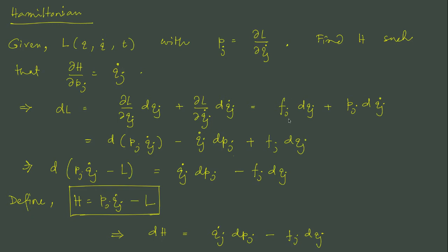Let us suppose del L del qj is fj, so fj dqj plus del L del qj dot is pj, so pj dqj dot. Remember everywhere we have sum over j because we are following the Einstein summation convention. It makes the writing a little bit tidy without the summation sign every time.